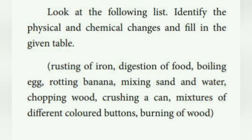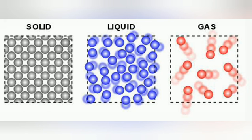Today's homework: identify physical and chemical changes. Take page number 37 in your book and draw a tabular column in your rough note. The items to classify are: rusting of iron, digestion, chopping of wood, boiling an egg, rotten banana, mixing sand and water, chopping wood, crushing a can, mixing different colored buttons, and burning of wood. List out which are physical and which are chemical changes. Also, what are the states of matter? Solid, liquid, and gas.